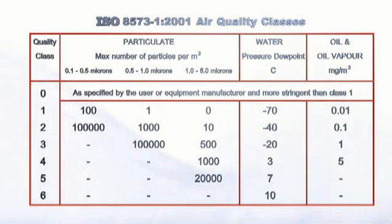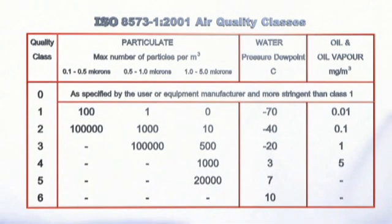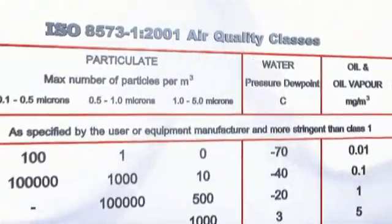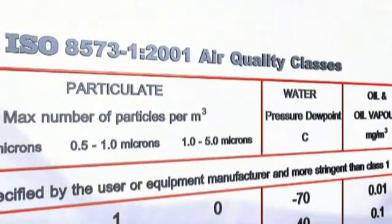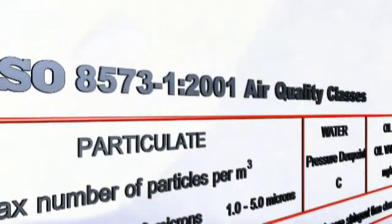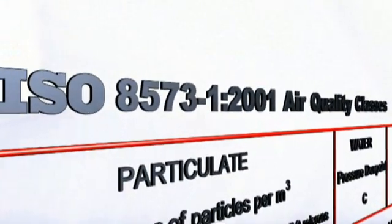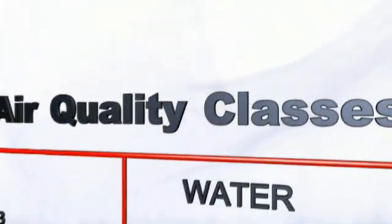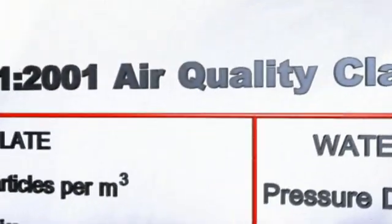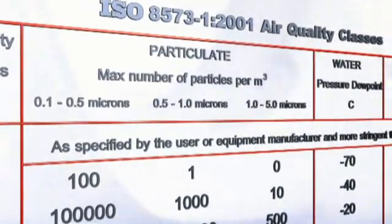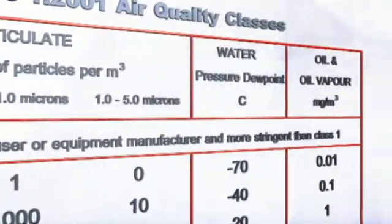Defining and controlling air quality is so important that the International Standards Organization, ISO, developed several compressed air quality classes, defined by their specification ISO 8573 Part 1. Allowable levels of contaminants are defined in three categories: particulate, water, and oil.